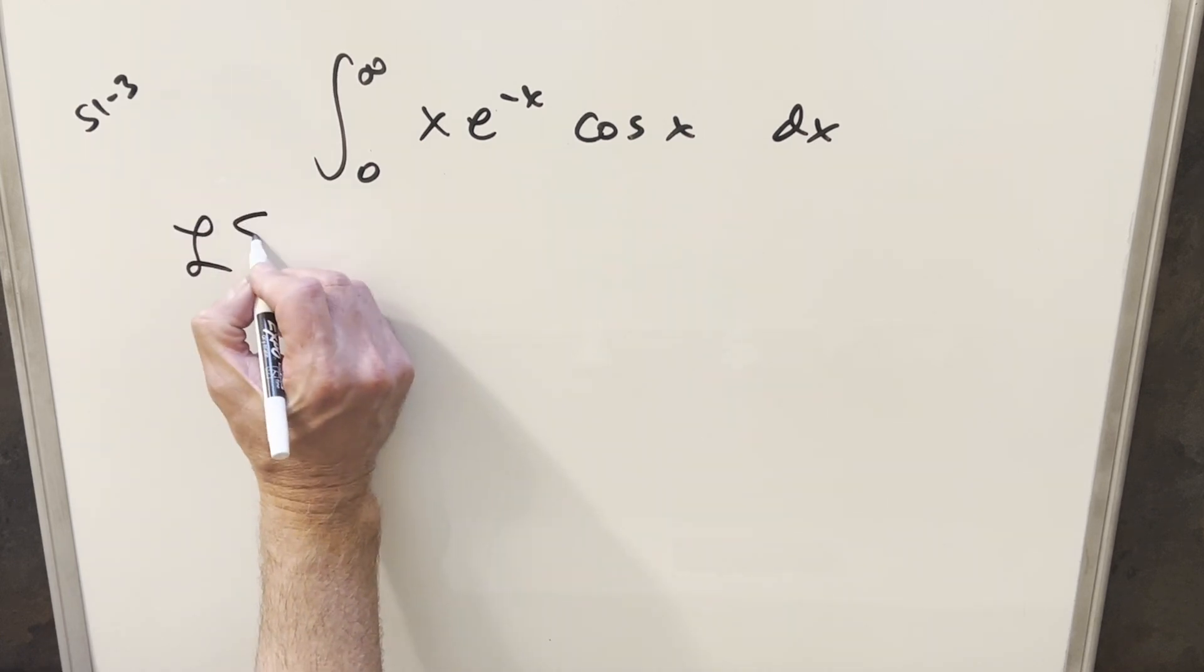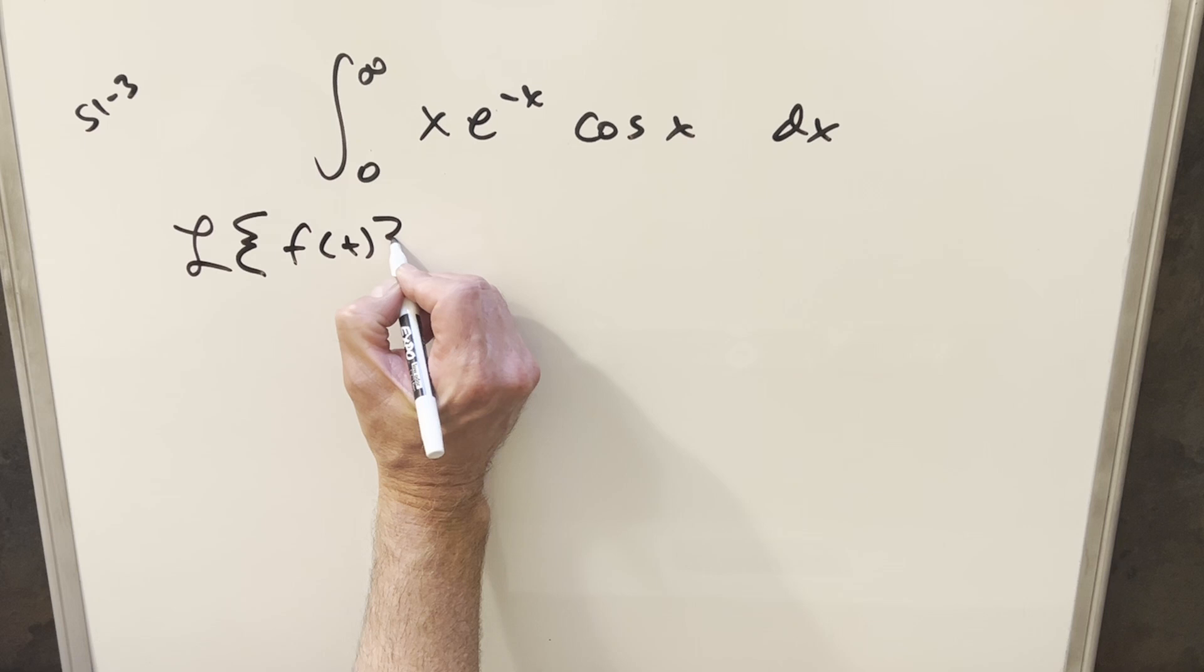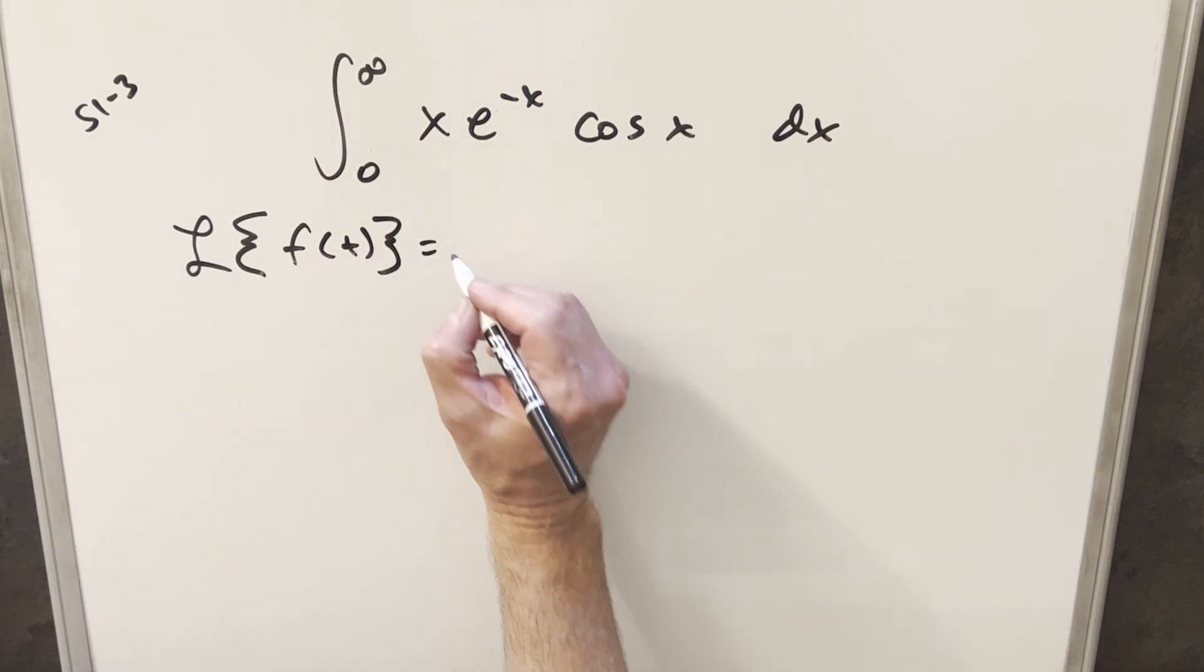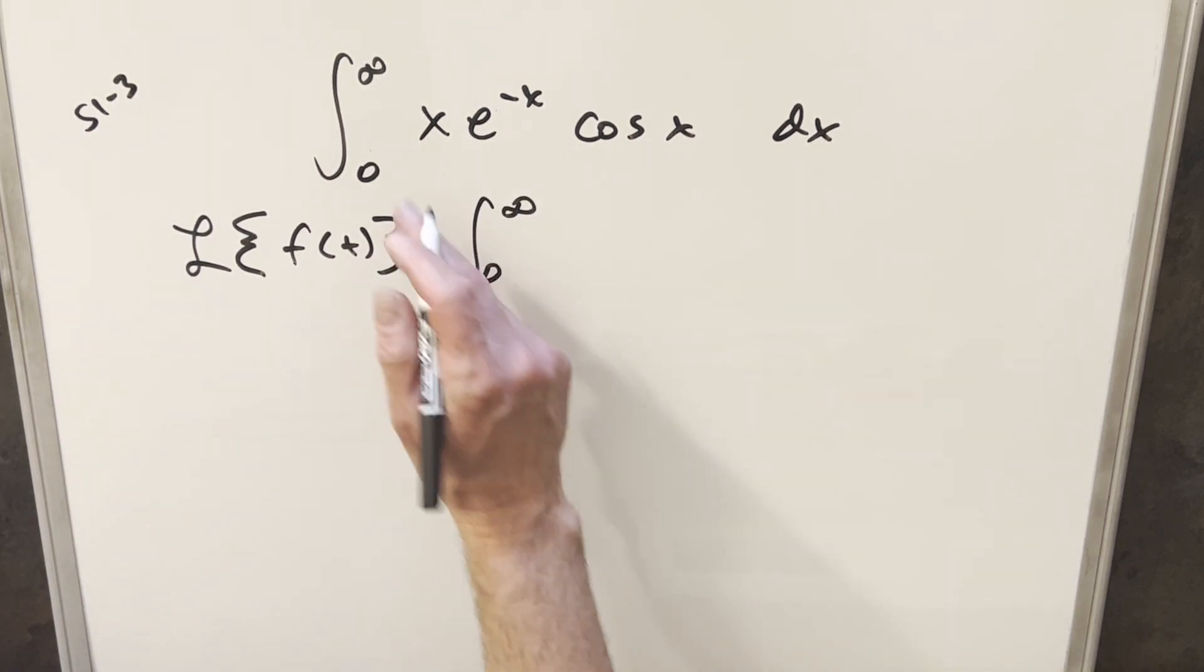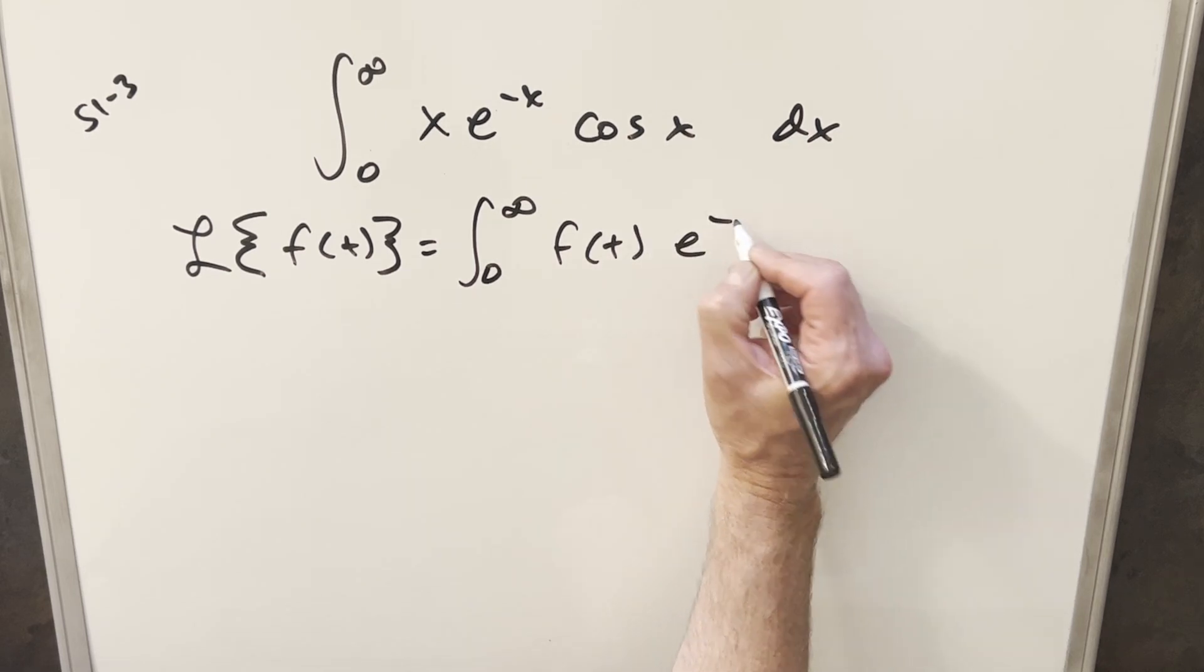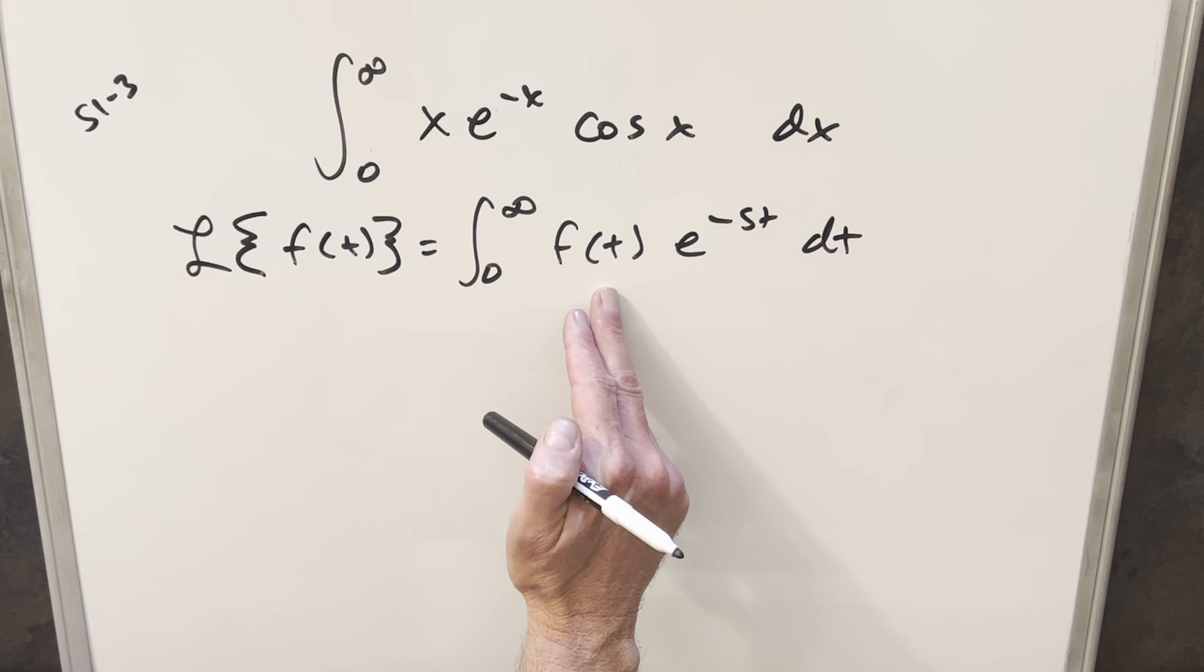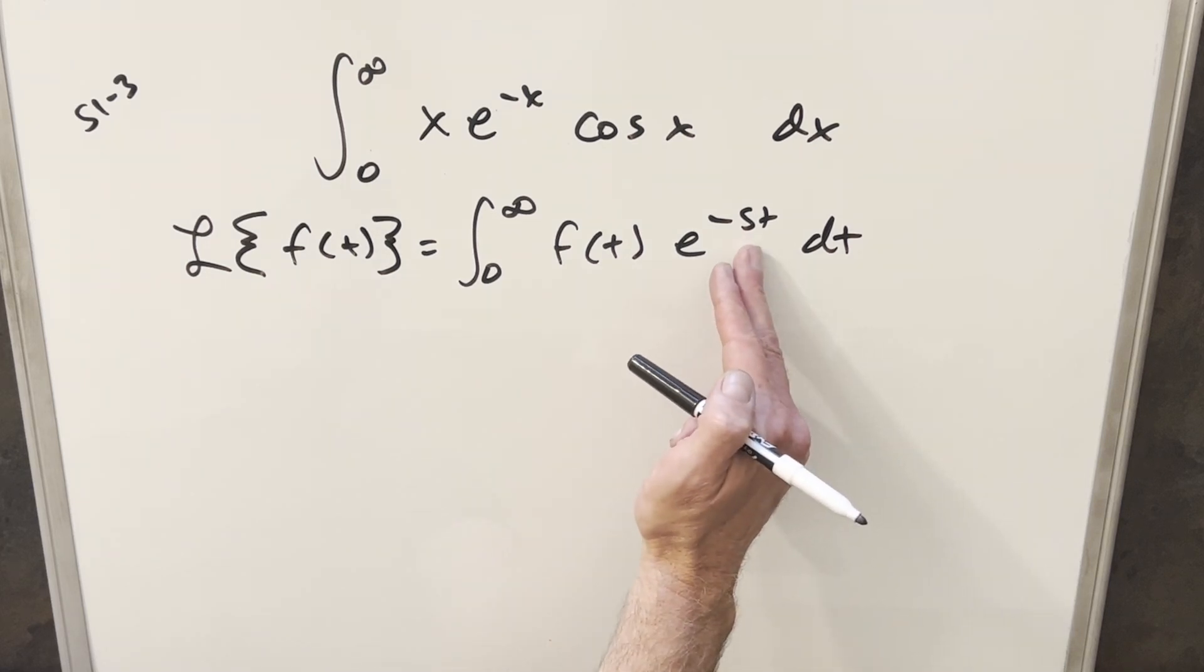So first what we'll do is we'll just look at our definition for the Laplace transform of some function f of t. This is going to be the same thing as just an integral from zero to infinity, like what we have here of our function f of t times e minus st dt. And so just notice in our Laplace transform, everything's in terms of t except for this s.